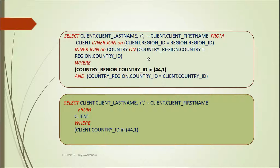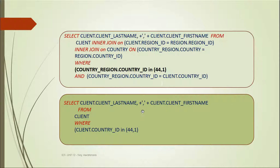Let's look at an example. When client index awareness is applied, you can see an inner join is applied to client, region, and region ID — but region ID is actually a foreign key to the client table, making that join unnecessary. By applying index awareness, the query becomes simply: SELECT client WHERE client.country_ID IN (44, 1), removing the unnecessary joins related to the country region table.